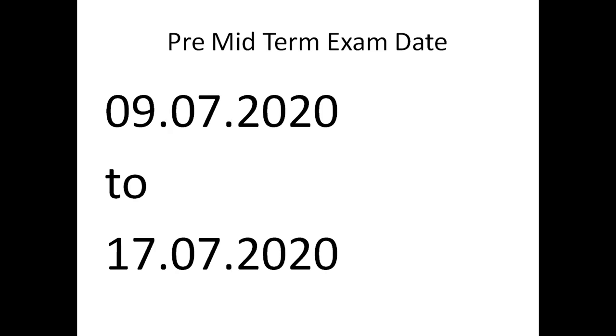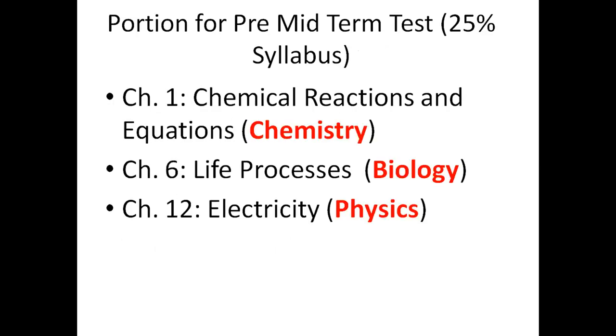You should have all the information: what kind of exams we have, the syllabus, everything. For the first exam, there is 25% syllabus and there will be three lessons — one each from chemistry, biology, and physics. The first lesson from chemistry is Chemical Reactions and Equations. The biology lesson is Life Processes — chapter 6. And from physics, chapter 12 is Electricity. Write this down.